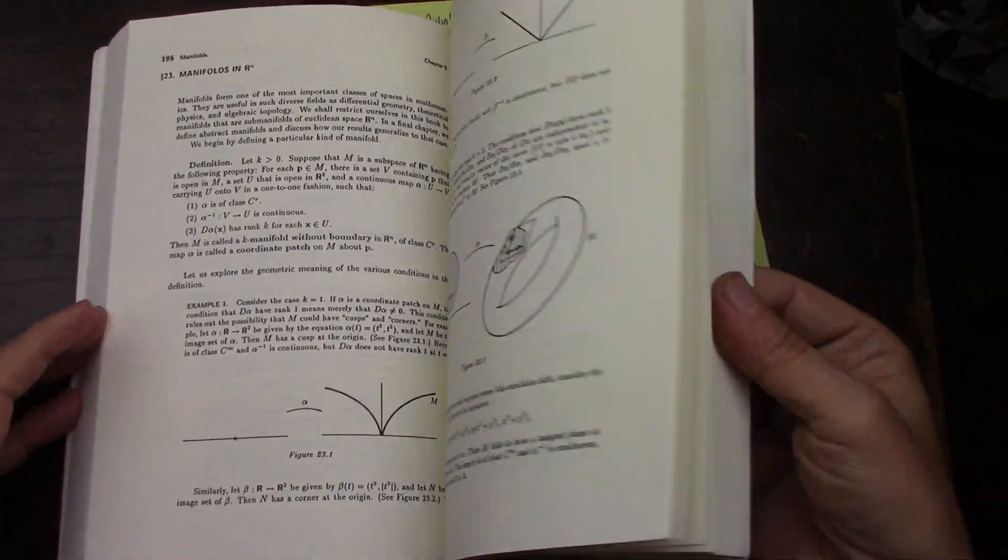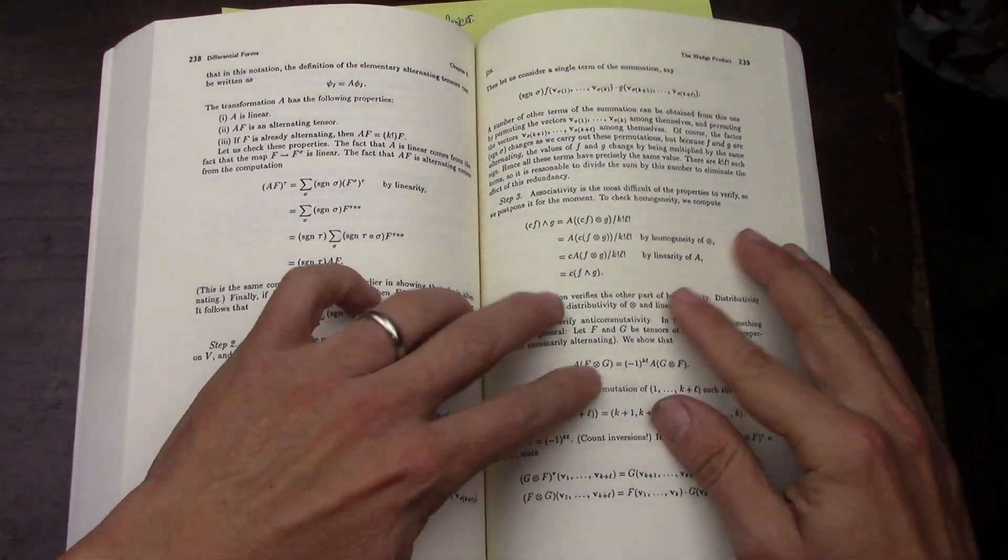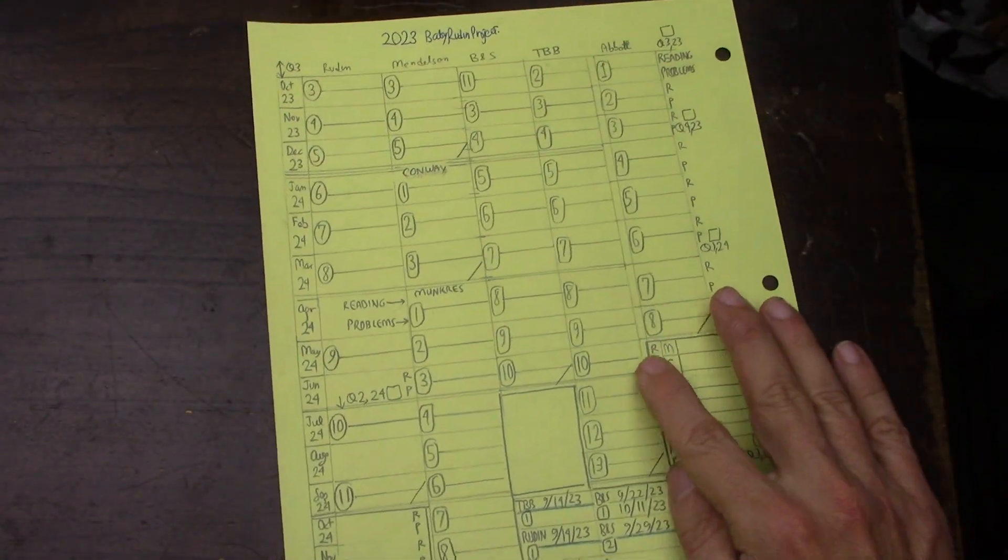And then, recently, I bought Monkers, and I was like, Yeah, okay, I can read this. I can read this. And so, the plan, getting back to this, is this lane has Mendelssohn,